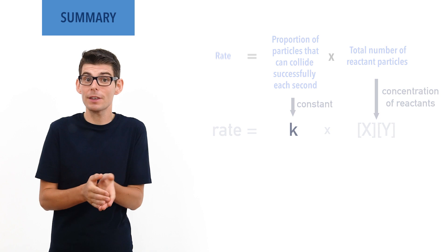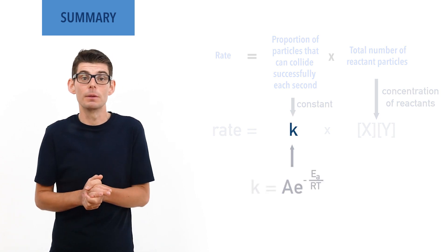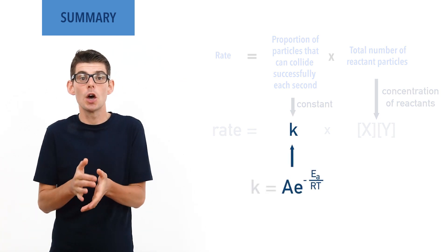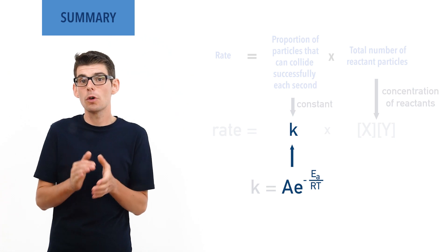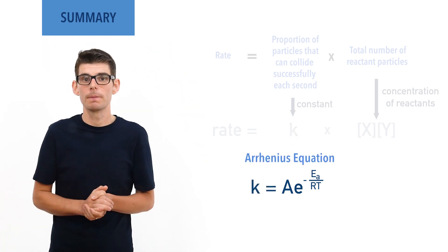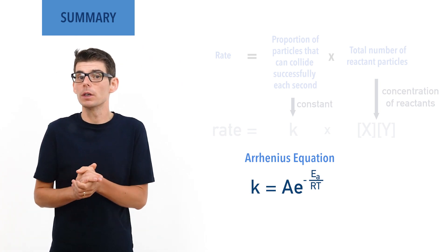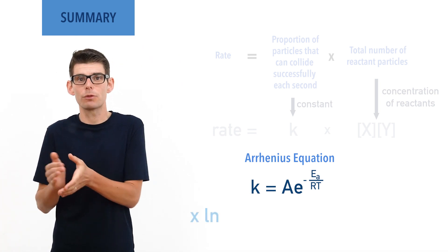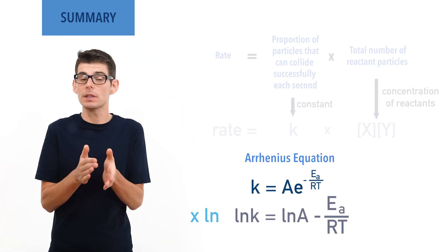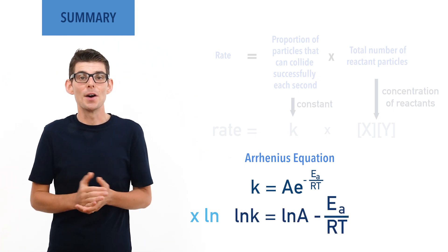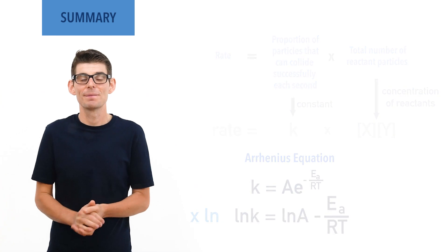This rate constant can be calculated using A times e to the power minus Ea over RT — the Arrhenius equation. To remove the E component, we multiply by ln (natural log) to get ln k equals ln A minus Ea over RT. I hope you found this video useful. Please check out other relevant videos in the links in the description below, and visit chemistrystudent.com for free notes and revision materials.